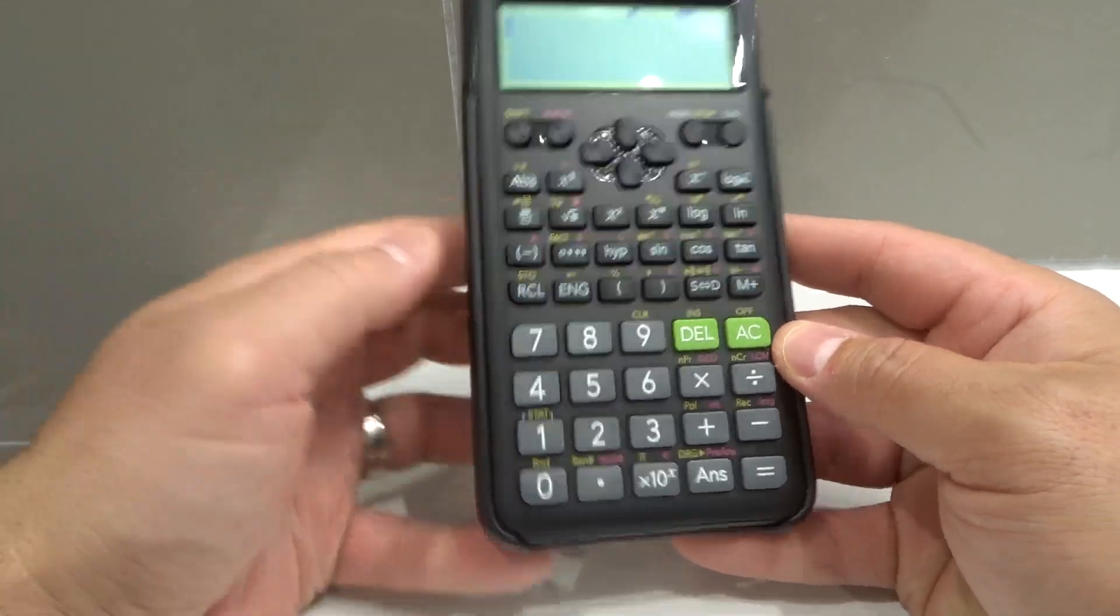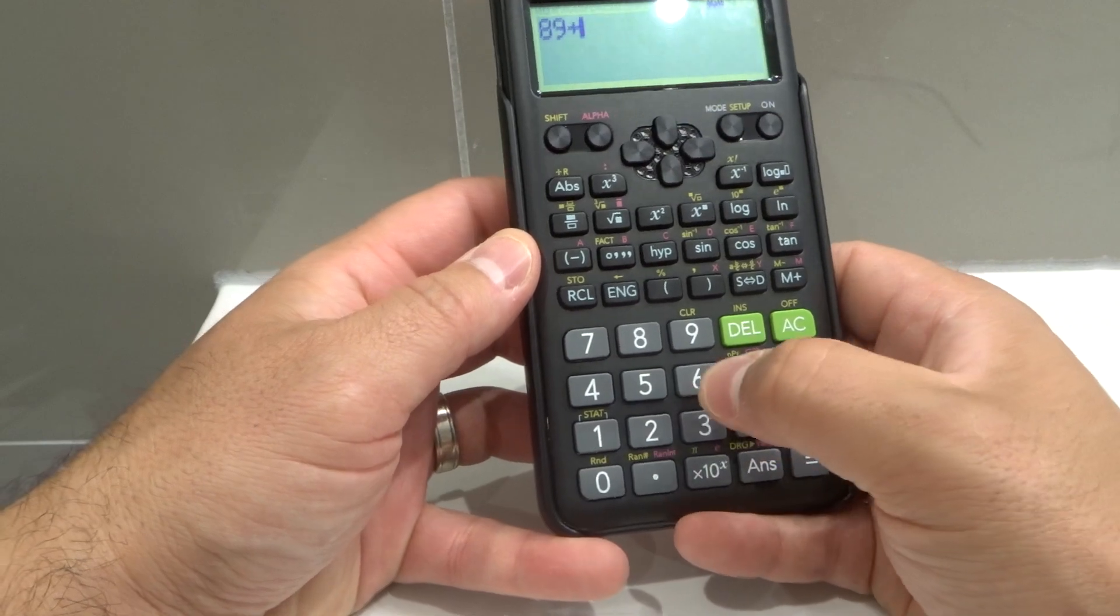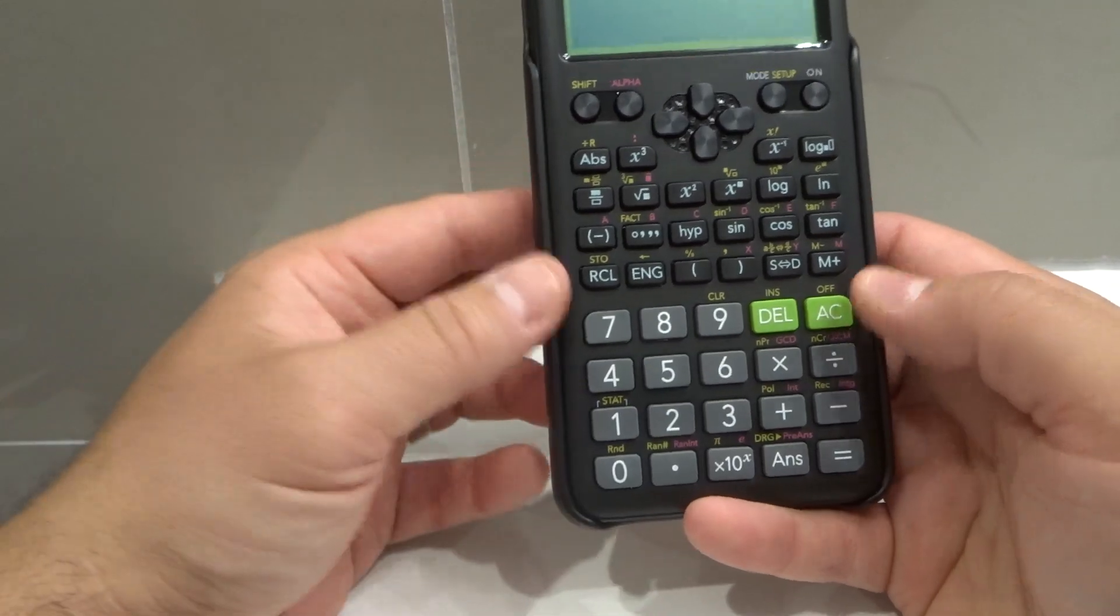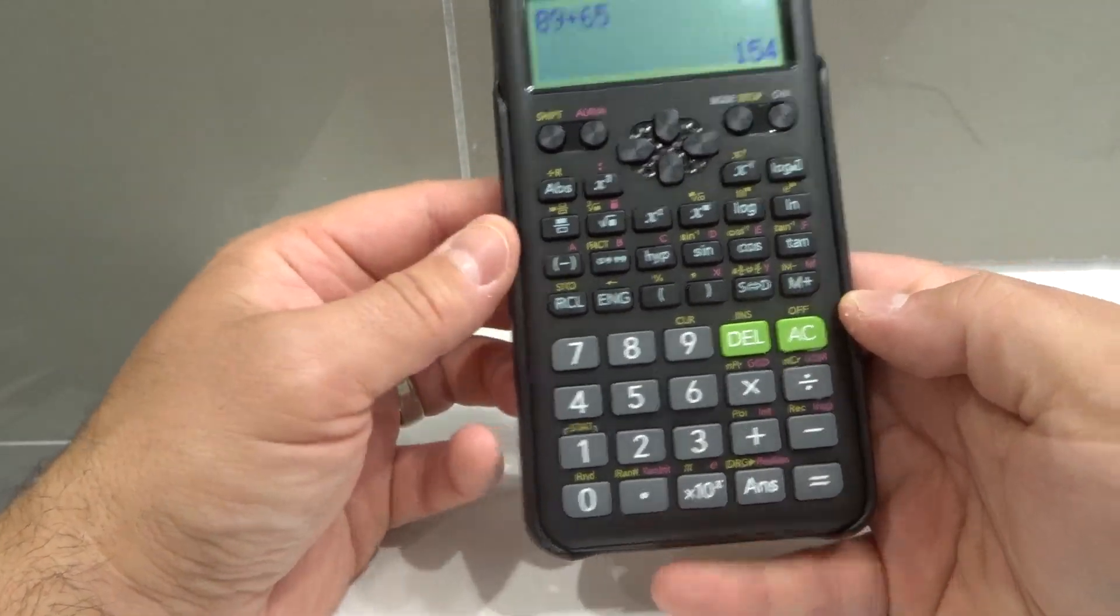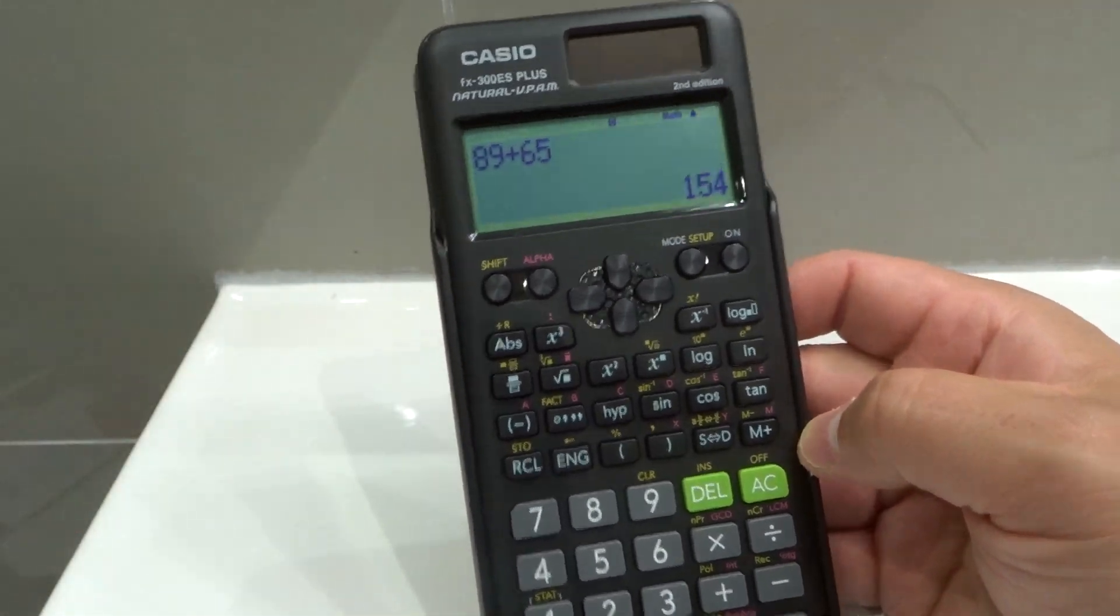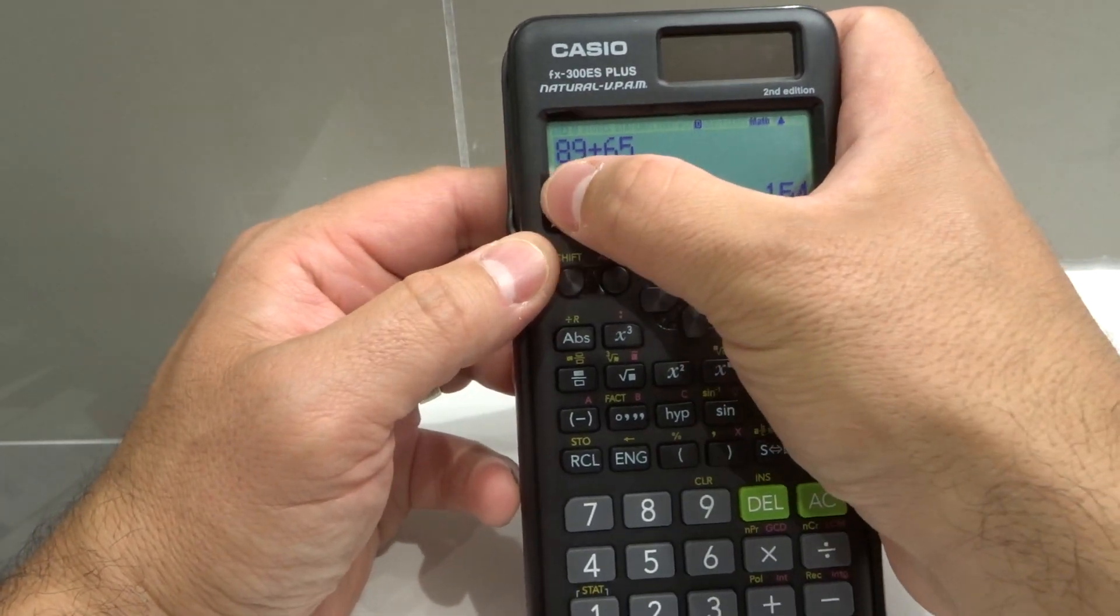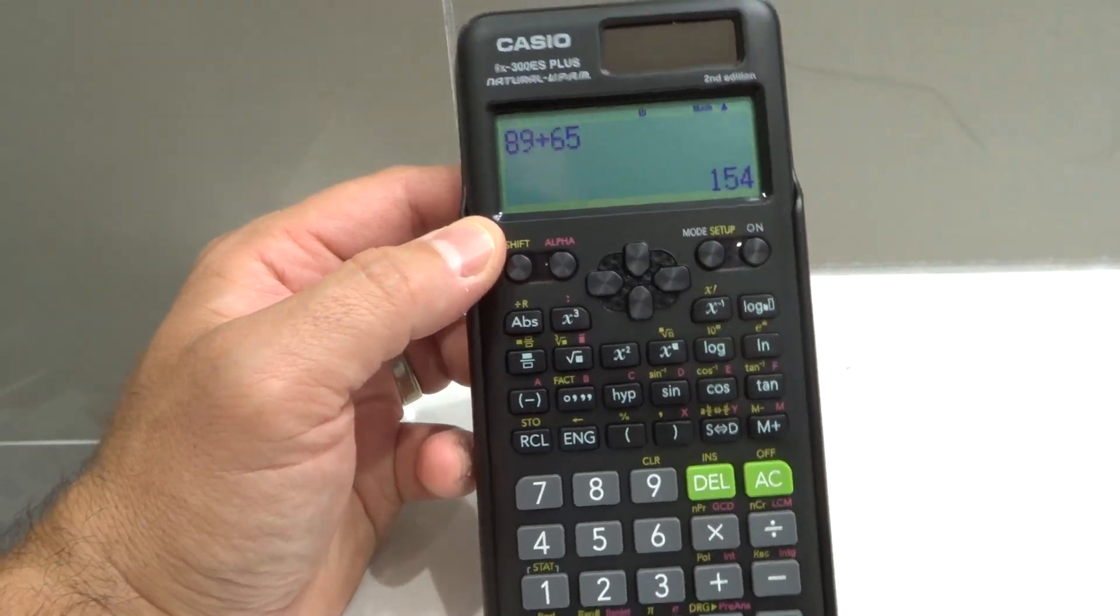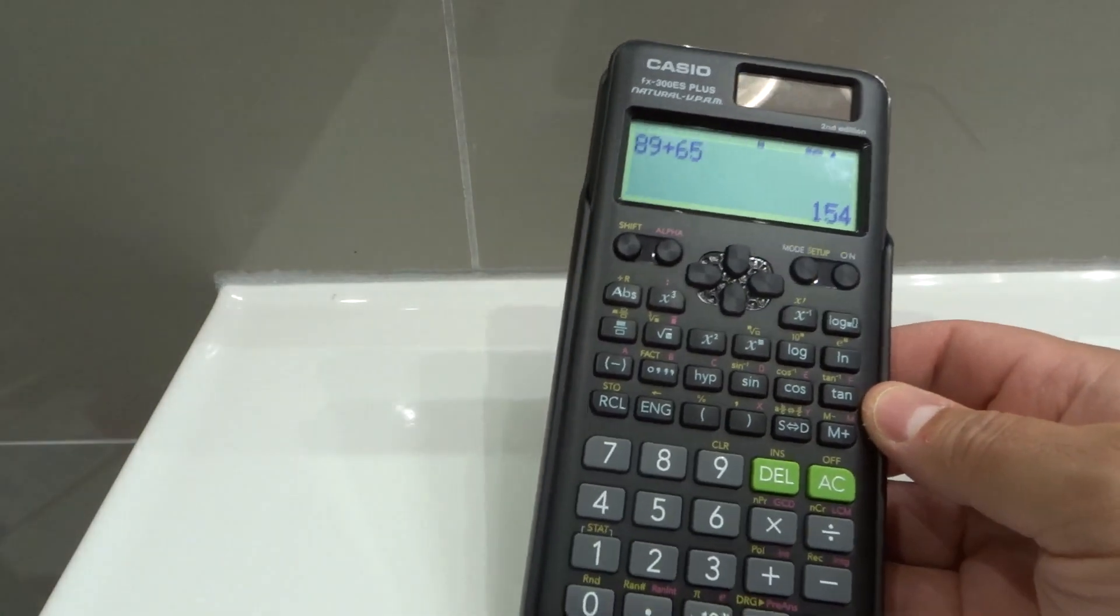It is packed with features. So you can use it for basic calculations - 89 plus 65 equals whatever you want to do. That's 154. As you can see, 89 plus 65 equals 154. So you can use it for basic functions like that. And I can't believe I just said that like 10 times.